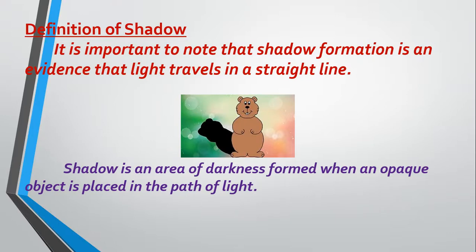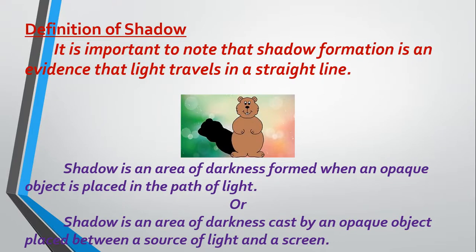Shadow is an area of darkness formed when an opaque object is placed in the path of light. Or: shadow is an area of darkness cast by an opaque object placed between a source of light and a screen. In these definitions we have the key terms: area of darkness, opaque object, source of light, and screen. Make sure to include at least two or three of these keywords in your definitions to score a point.